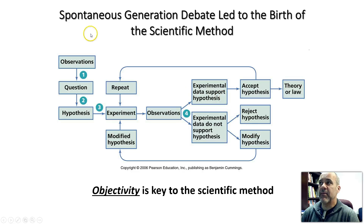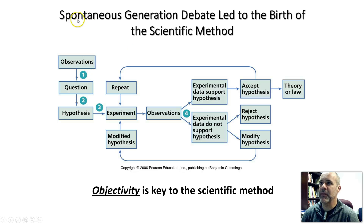A little bit more about the history: there was a very long debate among scientists that lasted for hundreds of years called the Spontaneous Generation Debate, and this ultimately led to the birth of the scientific method.